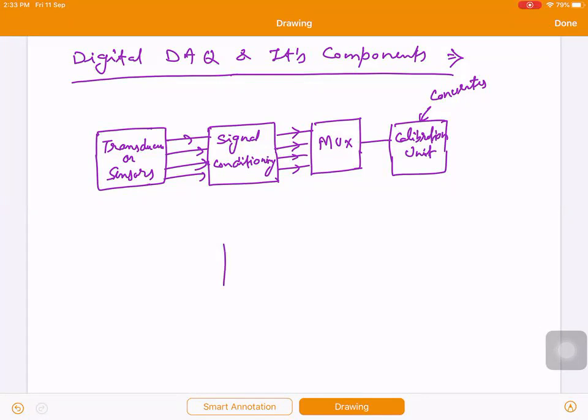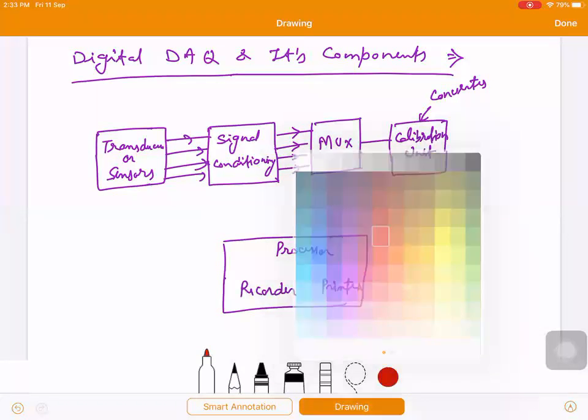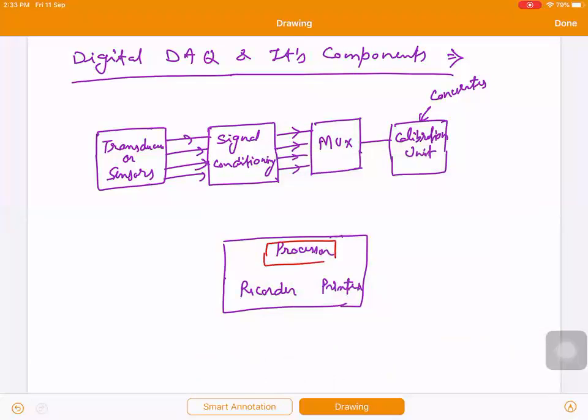The main DAQ component is computer to process the data. So we have processor, we have recorder, we have printer for displaying. Any units can. So processor, recorder data for processing, printer output display, and that is connected with this computer.